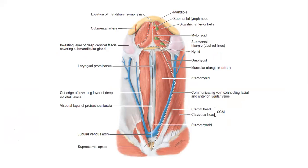This is a very simple submental triangle. The floor is formed by the mylohyoid muscle. Mylohyoid forms the floor, with the median raphe. This is the median raphe, joining the two sides of the mylohyoid — in between by a median raphe.